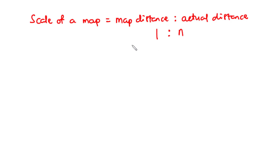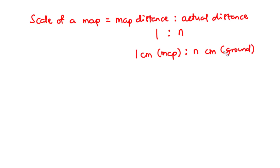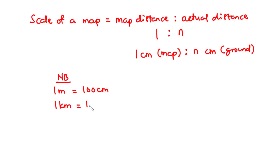We need to insert a unit, and since the map is usually small, the unit of measure is usually in centimeters. So what this primarily means is that 1 centimeter on the map represents n centimeters on the ground. You can also be asked to find the actual distance in meters or kilometers. Note that 1 meter equals 100 centimeters, 1 kilometer equals 1000 meters, and 1 kilometer also equals 100,000 centimeters.